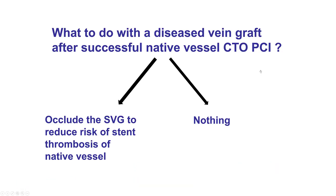Now that we have the native vessel recanalized, the question is what to do with the vein graft. One option is to do nothing, because we know that this vein graft has been restenoting repeatedly, and therefore it would likely occlude by itself. The other option is to occlude the vein graft to reduce the competitive flow and the risk of thrombosing the native coronary vessel.